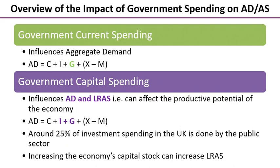Flipping now to capital spending: this can influence both aggregate demand and aggregate supply — in other words, it can affect both real GDP directly and our potential GDP. Aggregate demand has the components C plus I plus G plus X minus M. Capital spending affects both I and G. Around 25% of all investment spending in the UK is carried out by the public sector.